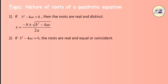Second, if b squared minus 4ac is equal to 0, then the roots are real and equal, or coincident. x is equal to minus b plus or minus root of 0, upon 2a.